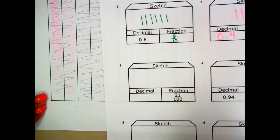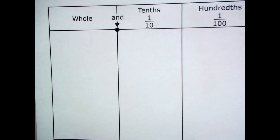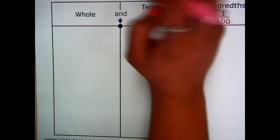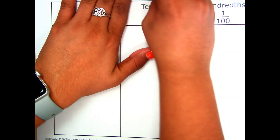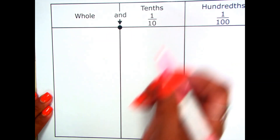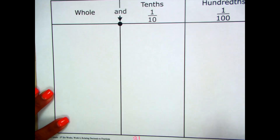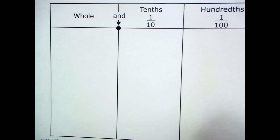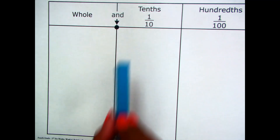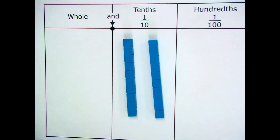Now let's look at our twenty-one-hundredths. I'm going to get my manipulatives out and look at twenty-one-hundredths. Should I get twenty-one units? If I'm looking at hundredths, I know it's units. Or should I do something else? I should get two rods — this is one rod, this is two rods — and how many units do I need? Just one. This represents my twenty-one-hundredths.